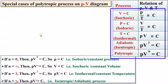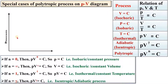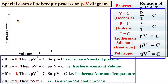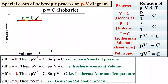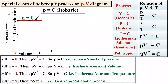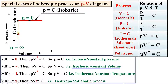Let us draw all these processes on the PV diagram one by one. On the pressure versus volume diagram, starting from the initial state: I have drawn a horizontal line, which represents constant pressure — that is the isobaric process, where the polytropic index n equals 0. Next, I have drawn a vertical line, which represents the constant volume or isochoric process, where n equals infinite.